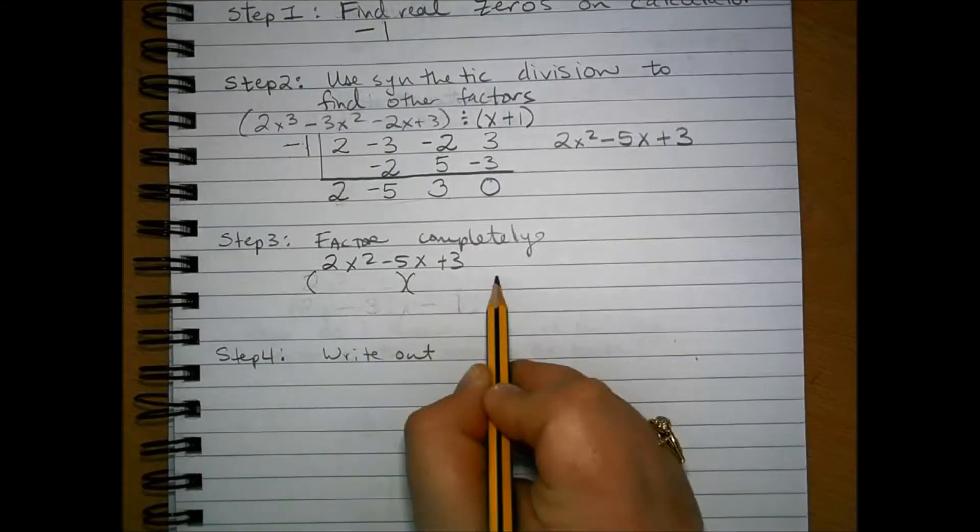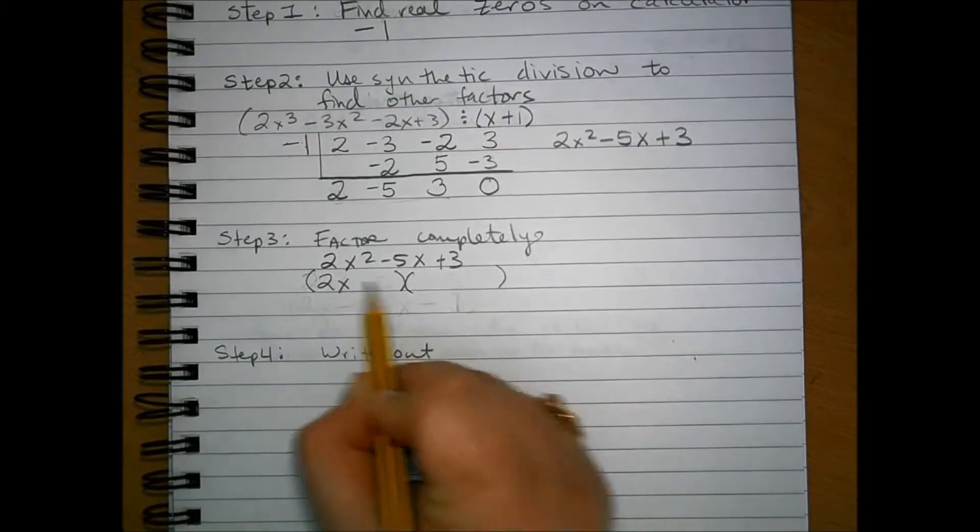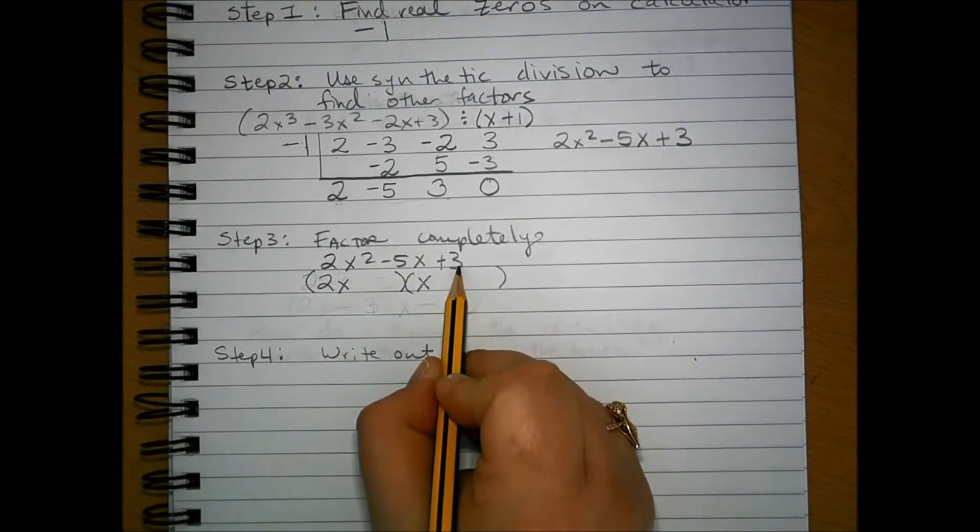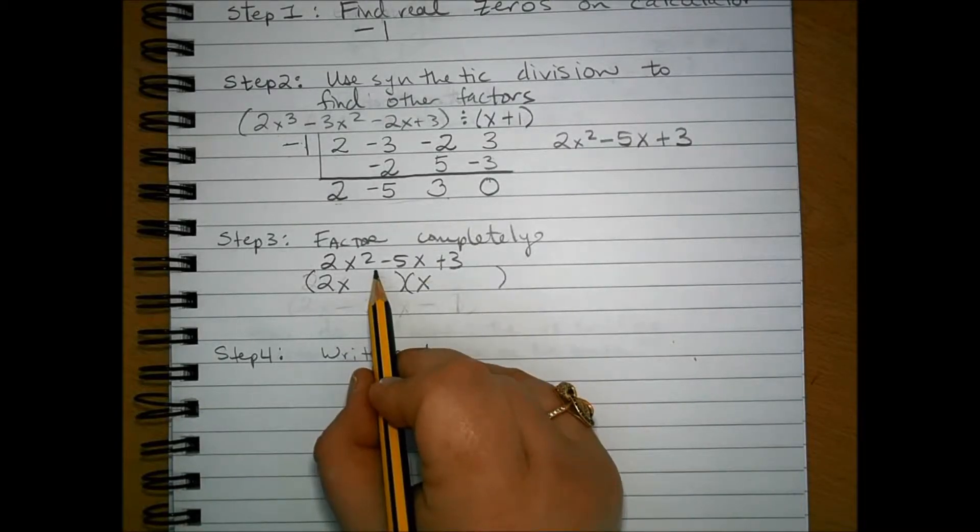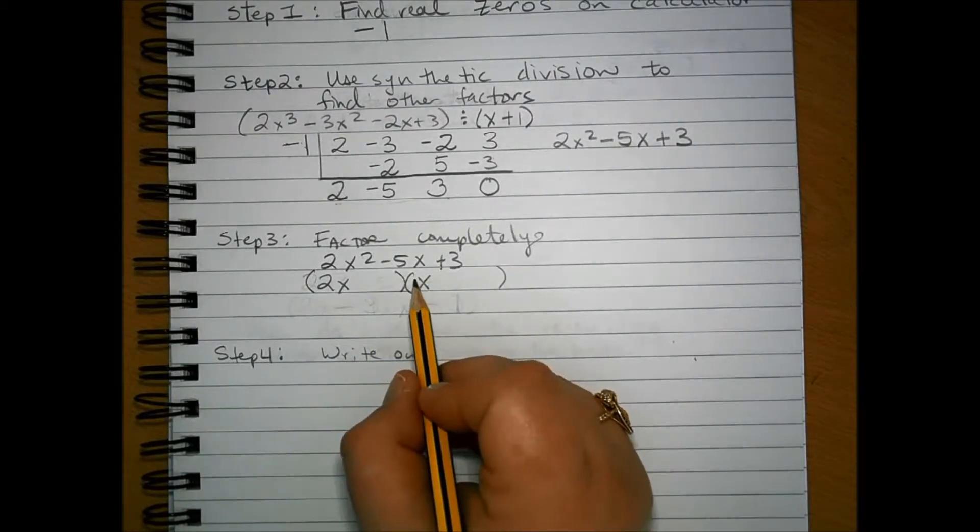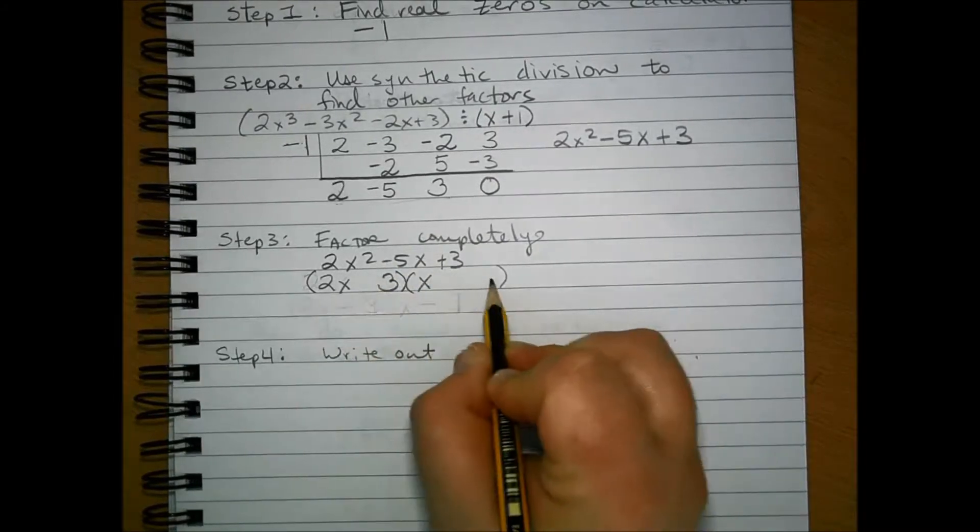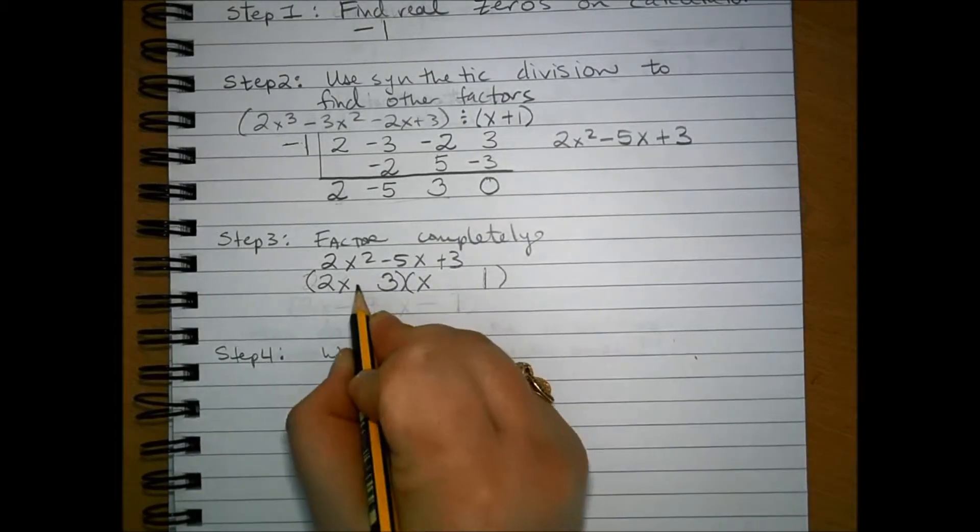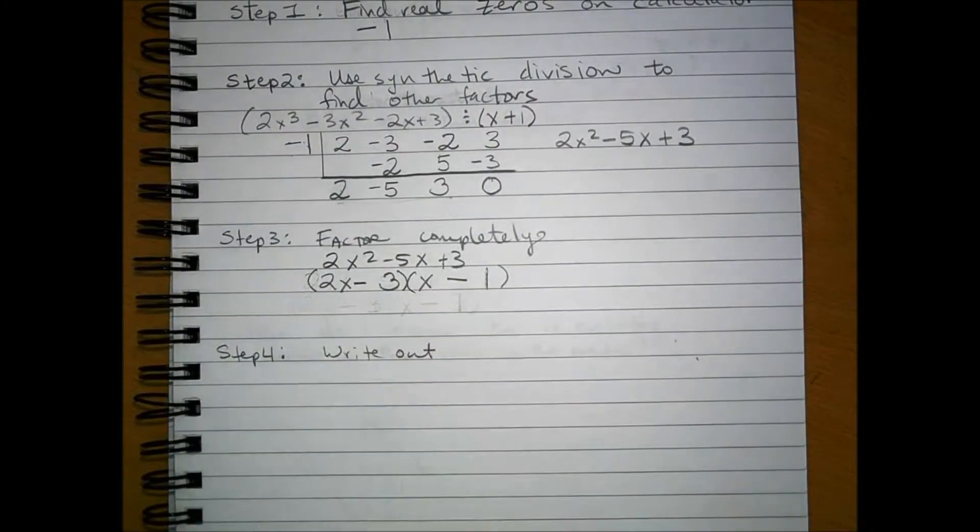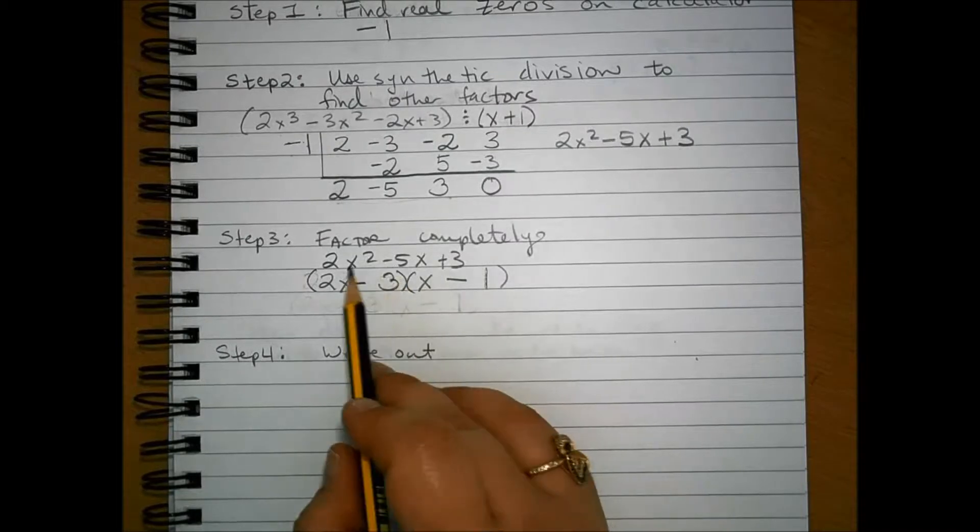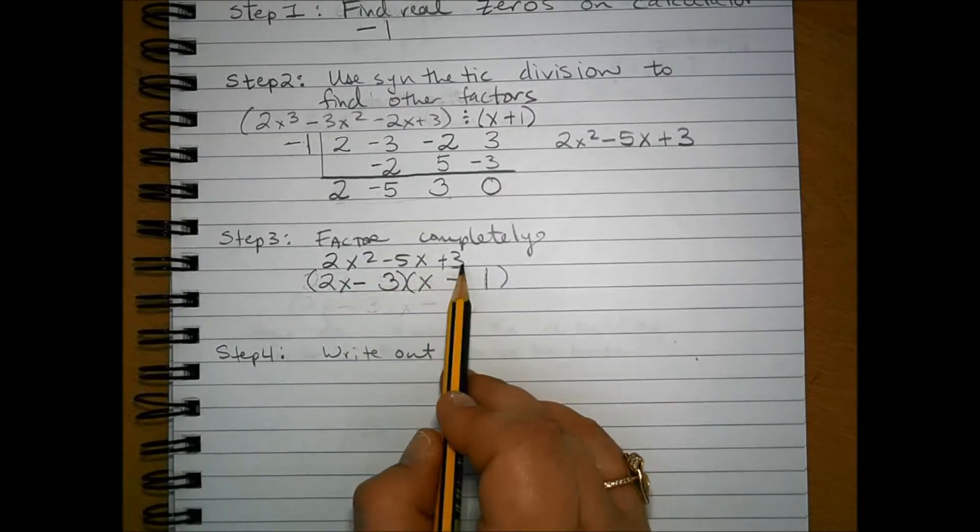So we're going to be looking for factors of 2x squared that combine with factors of 3 to make negative 5x. Now, I've already done a few tests of this already, so I know that if I take 2x minus 3 times x minus 1, it's going to be 2x squared minus 5x plus 3.